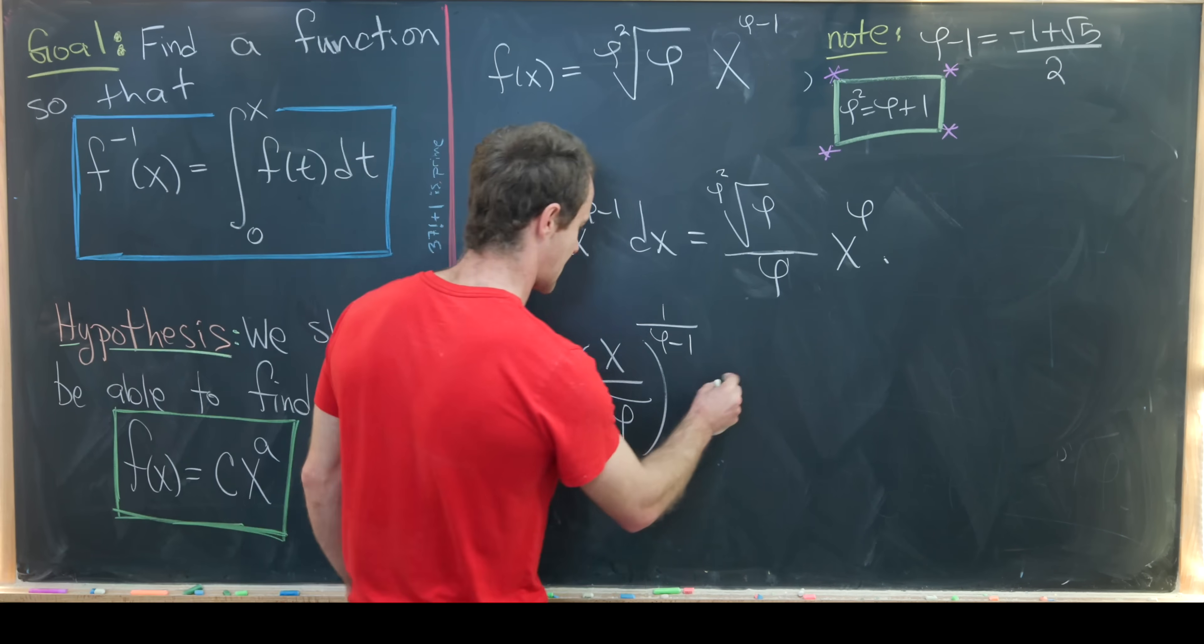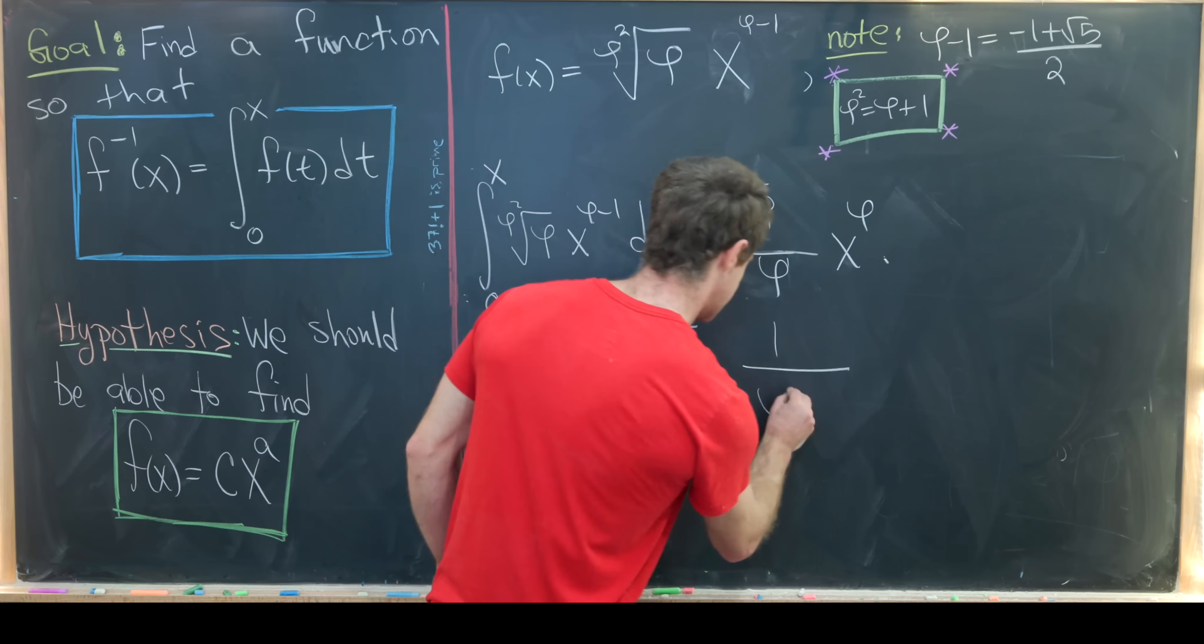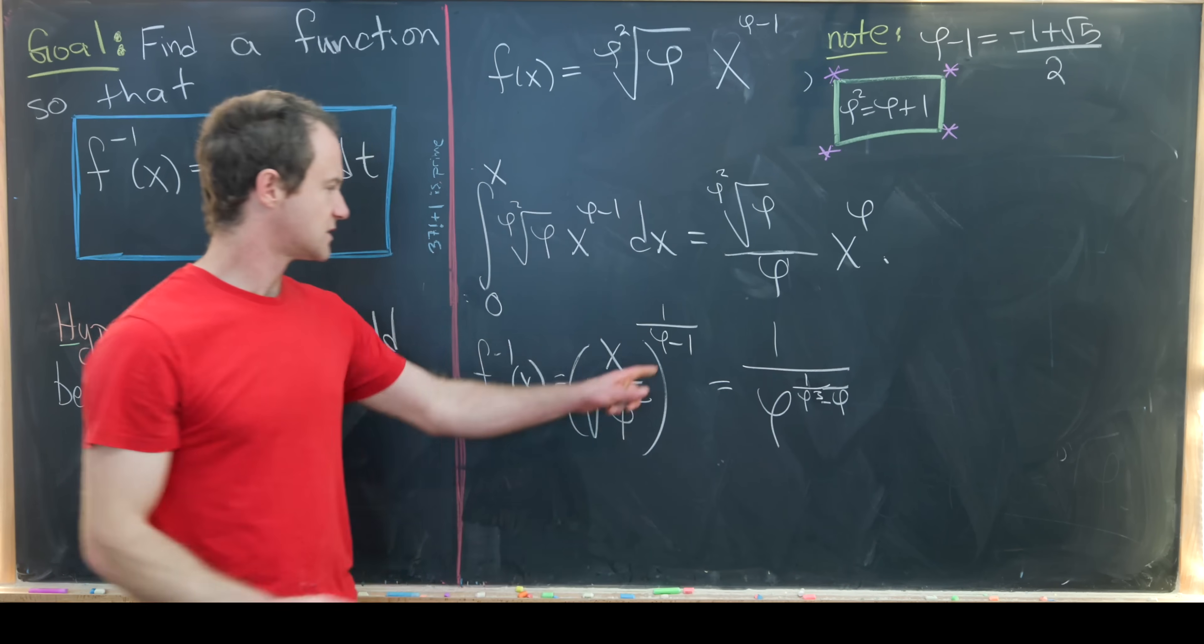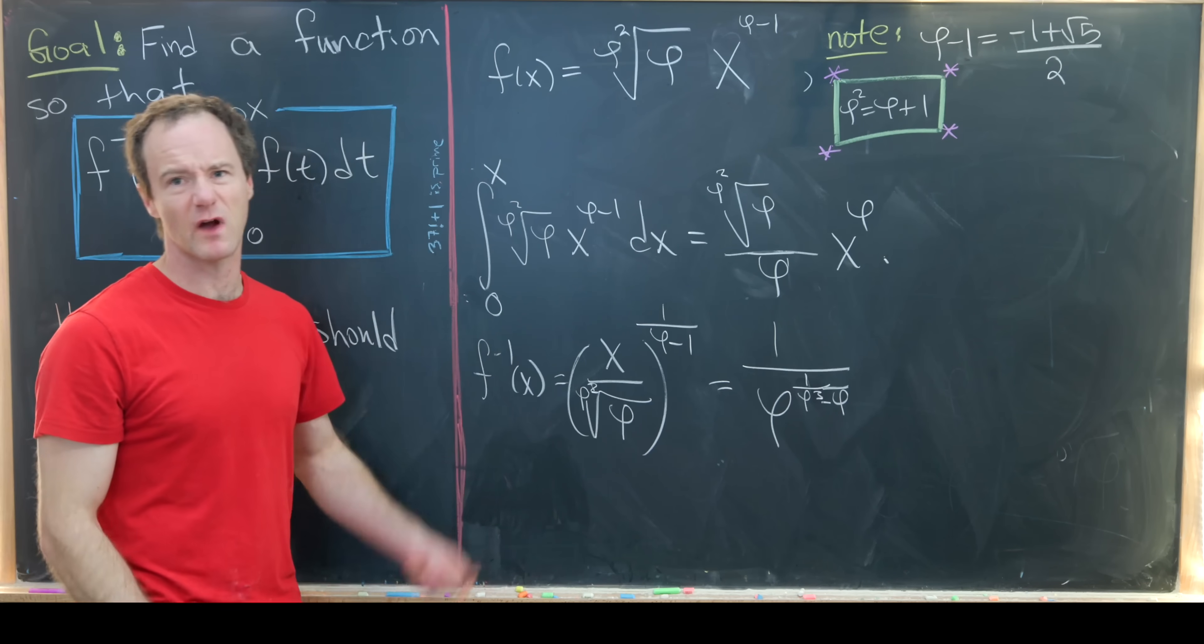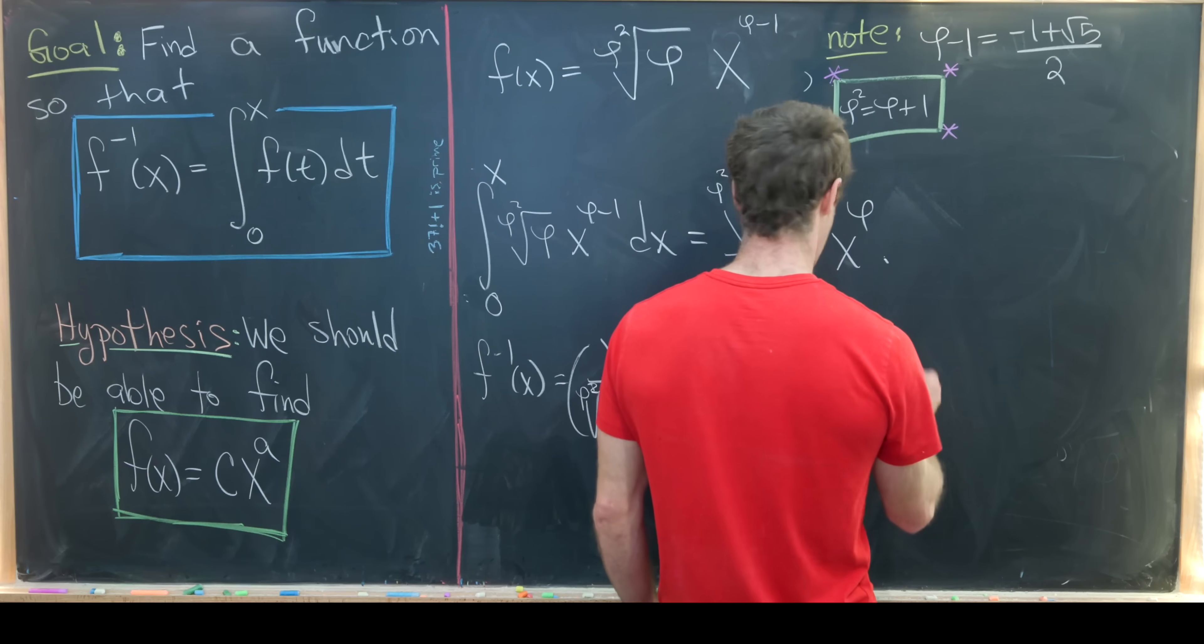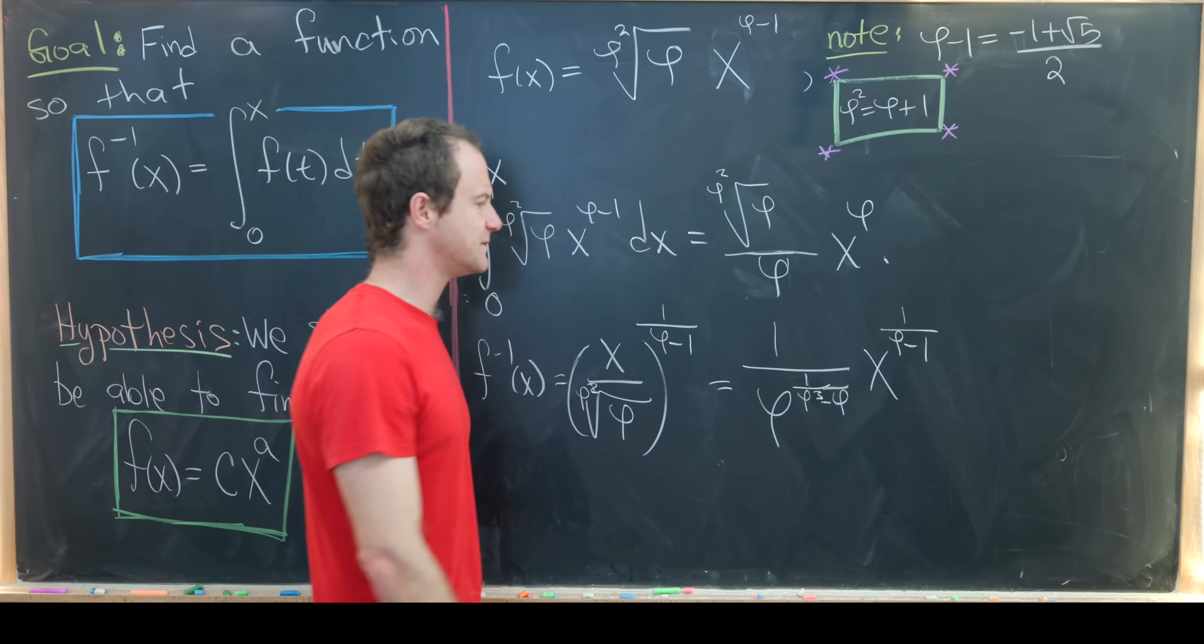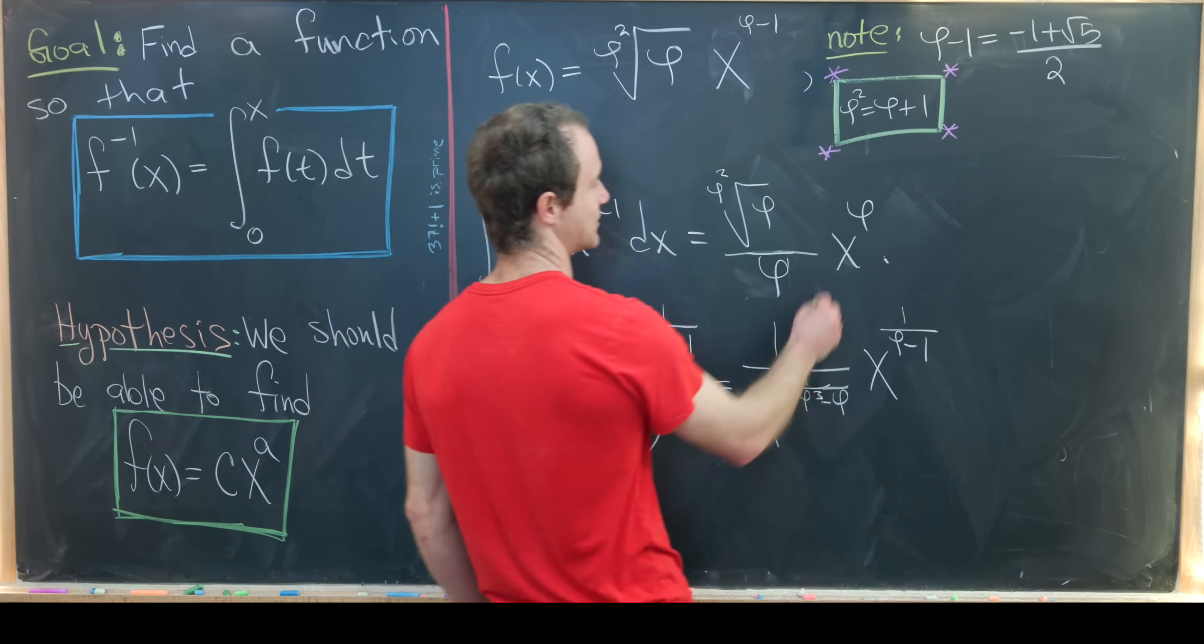Let's expand this out a bit. We'll have 1 over—this is now going to be phi to the power of 1 over (phi cubed minus phi). That's what we get from distributing this exponent to this root and writing them both as exponents. Then next we have x to the 1 over (phi - 1). For these to be equal, the exponents of x have to be equal and the coefficients have to be equal.